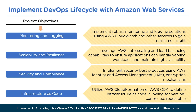In conclusion, implementing the DevOps lifecycle with Amazon Web Services enables organizations to embrace a DevOps culture and take full advantage of the AWS platform's capabilities. By automating processes, implementing CI/CD, and enhancing collaboration, the project aims to accelerate software delivery while maintaining high quality and reliability. It also establishes a foundation for scalable, secure, and resilient applications on the AWS cloud. And if you have all these skills, you will be easily employable.